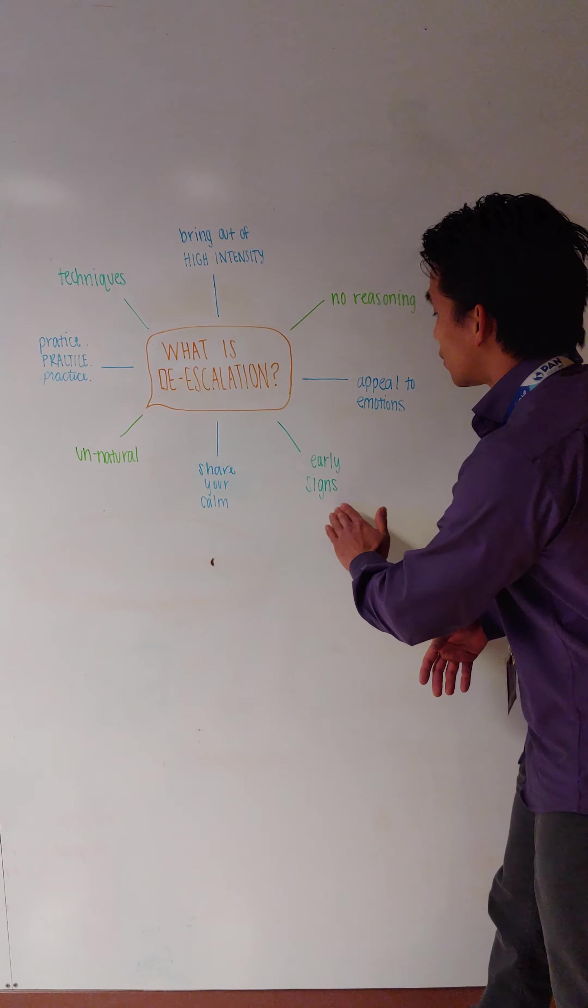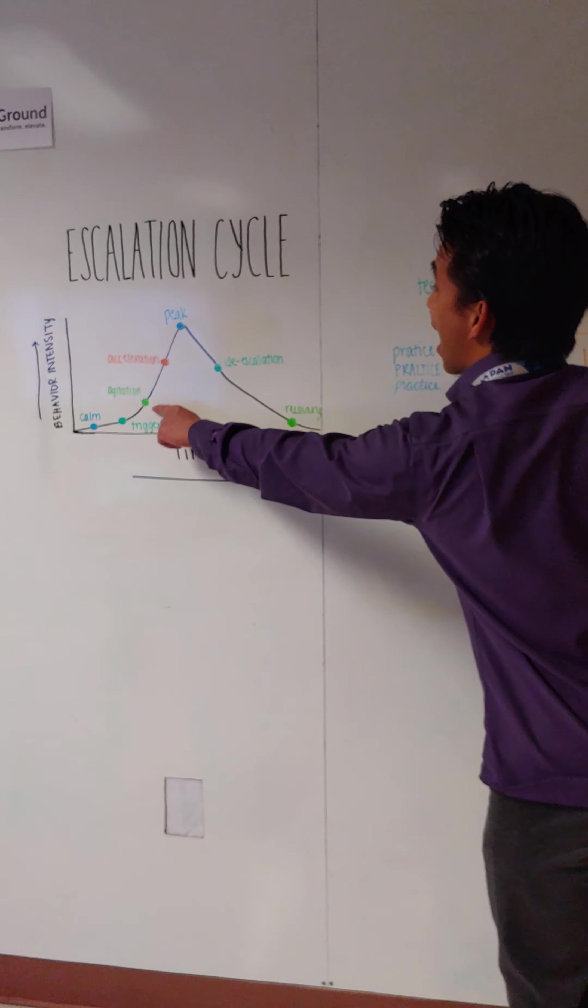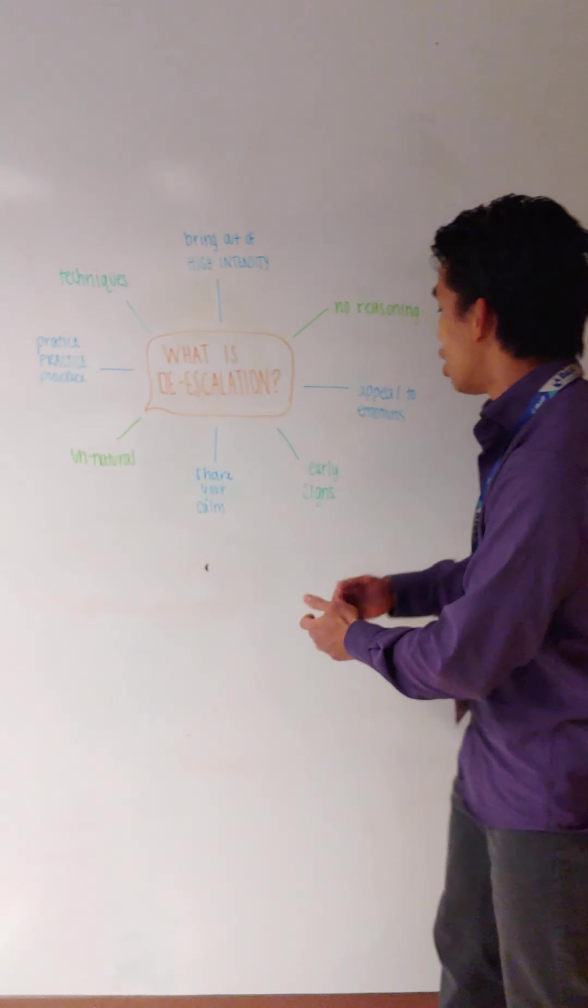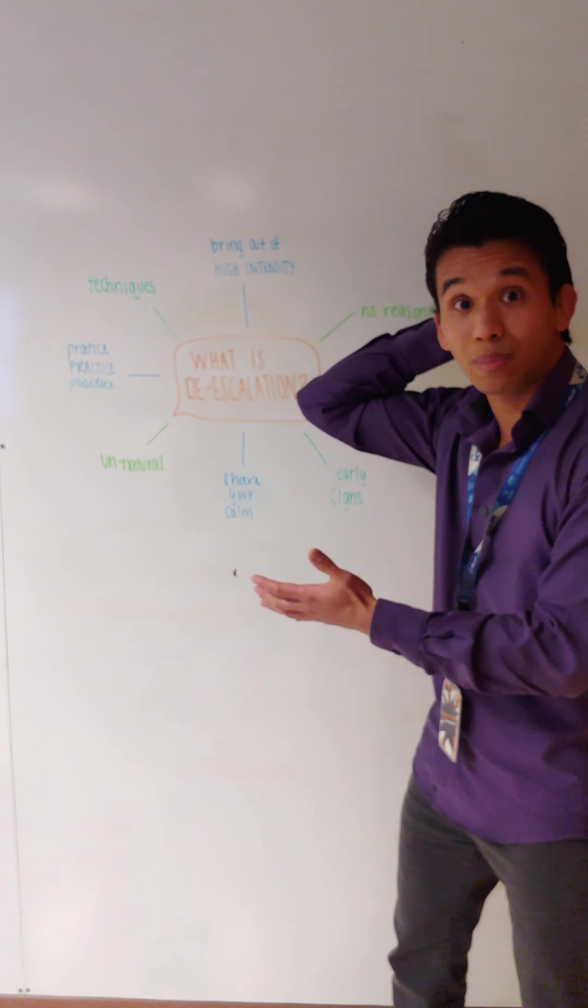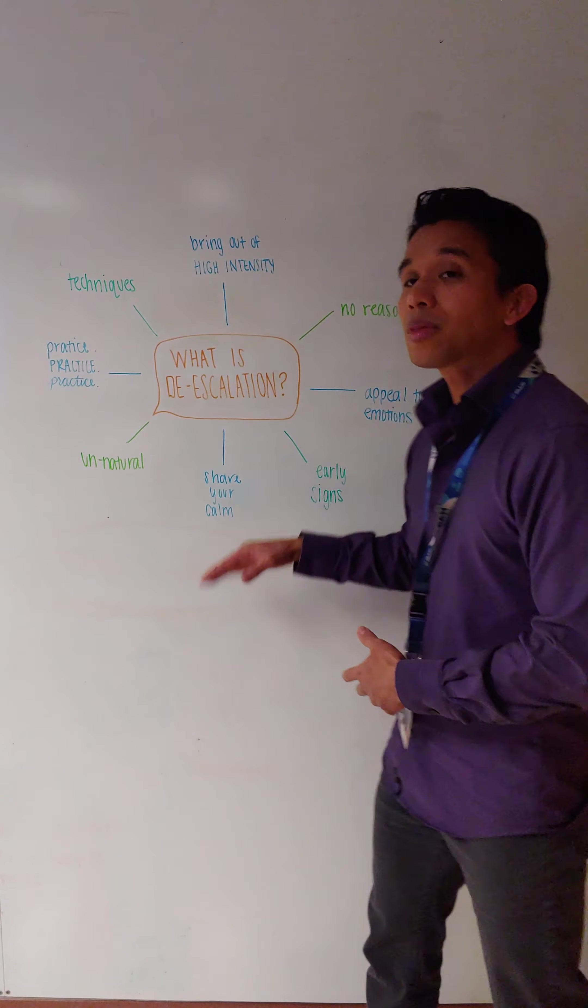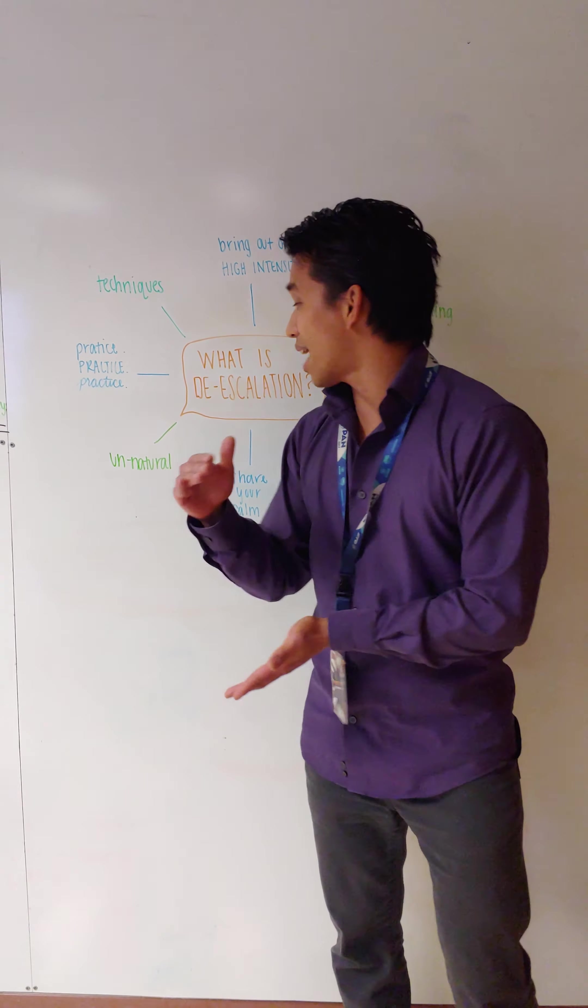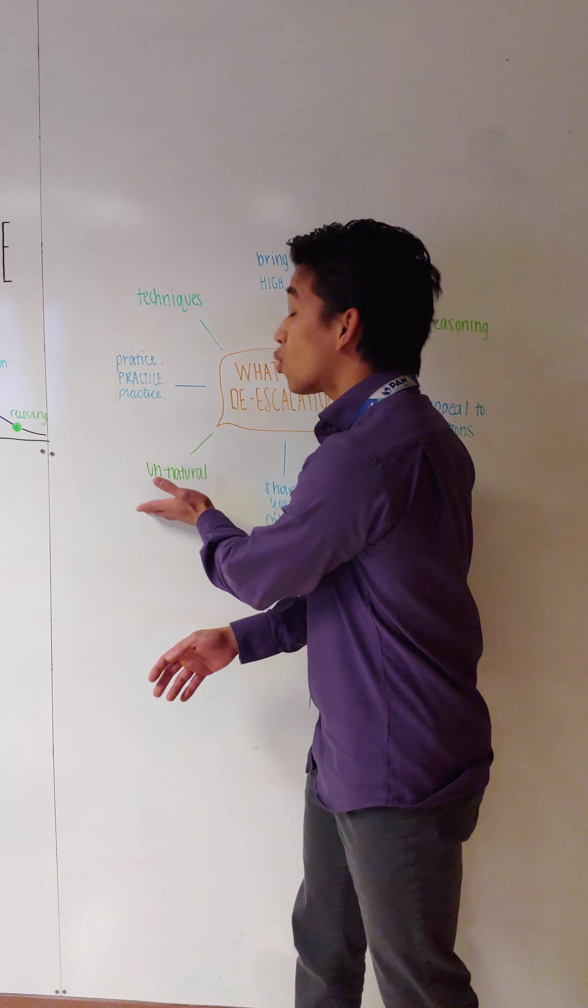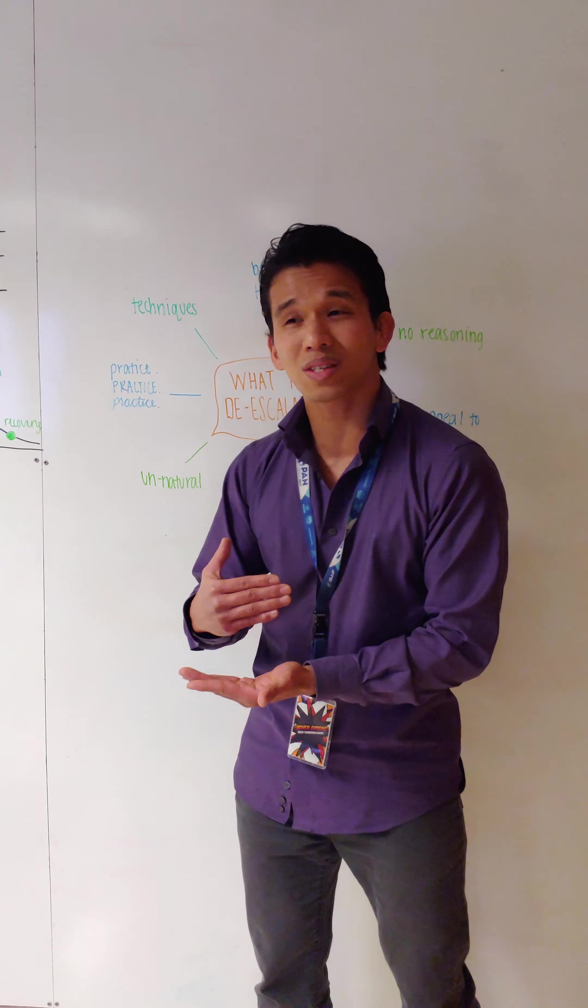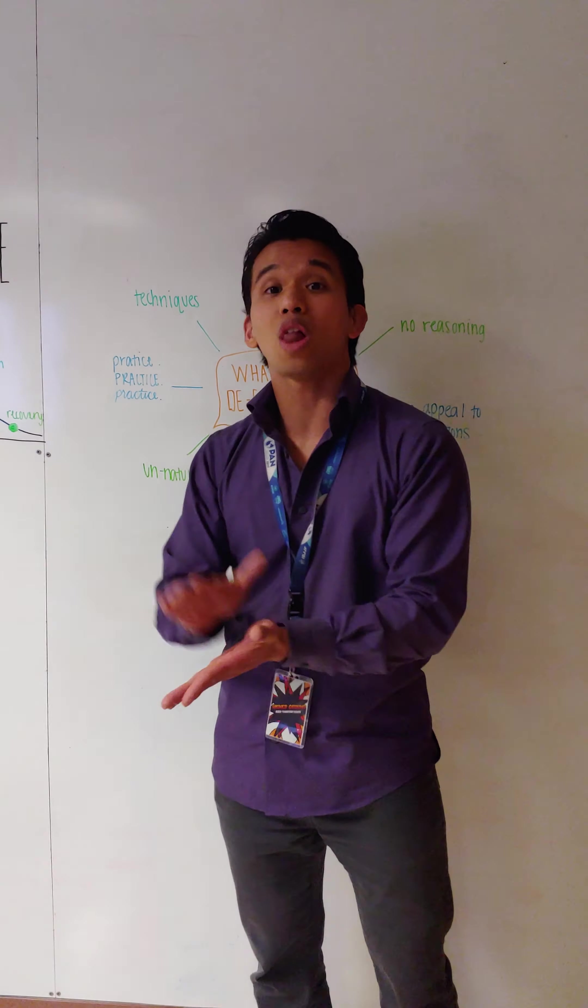Then, we need to be able to see the early signs. So, we need to be able to take this at the moment of agitation as much as possible, right? Take them out from going from this part of their brain to their reptilian brain, right? And then, sharing our calm. Calm is just as contagious as fear. Now, we do need to remember that de-escalation is quite unnatural. It's hard for us to stay calm when there's a lot of stressors. So, it requires a lot of practice.